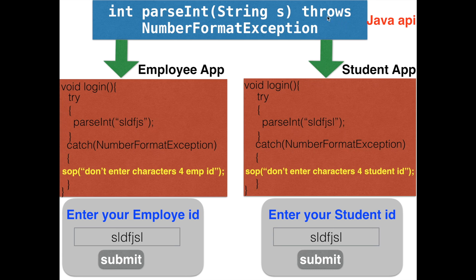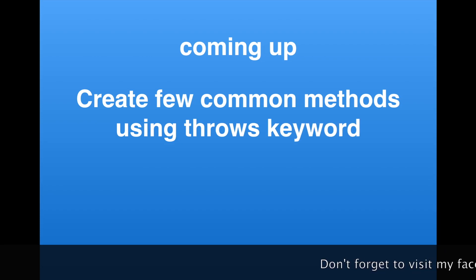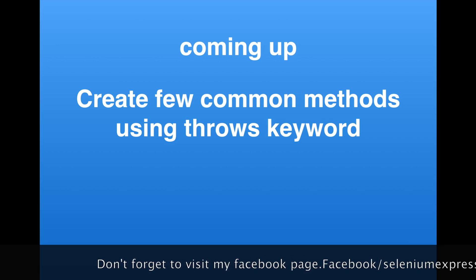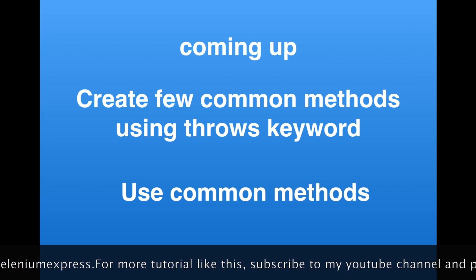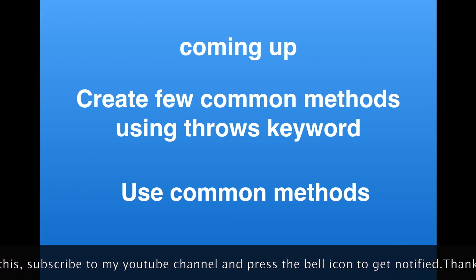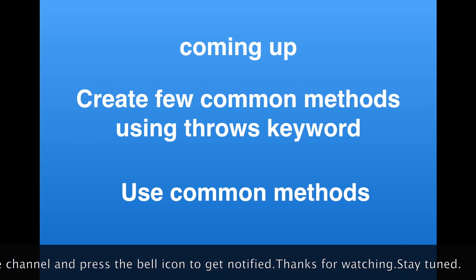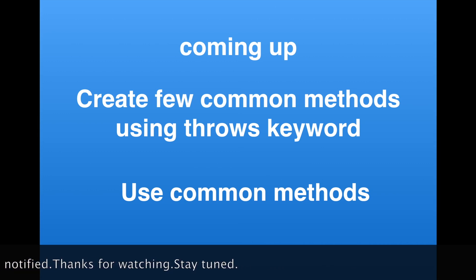Being a common method developer, you never handle the exception using try-catch — instead you throw it using the throws keyword in the method heading, so that whoever uses your method inside a specific method must handle it according to their application. The Employee App developer says 'don't enter characters for Employee ID' and the Student App developer says 'don't enter characters for Student ID' — specific messages for specific apps. In the next tutorial, we'll dive into Eclipse and create common methods using the throws keyword programmatically. Stay tuned and happy coding!